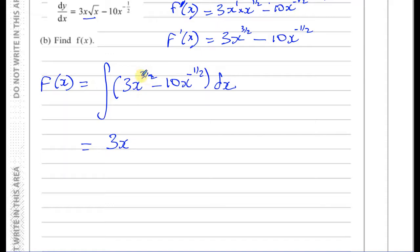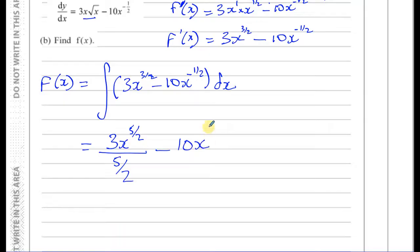Adding 1 to the power 3 over 2: that's adding 2 over 2, giving 5 over 2. Then divide by the new power 5 over 2. For the second term, adding 1 to the power negative a half gives positive a half. So we divide by the new power a half. Since this is an indefinite integral, we must always include plus c — a constant that disappears when you differentiate but must be written here, otherwise you will lose a mark.